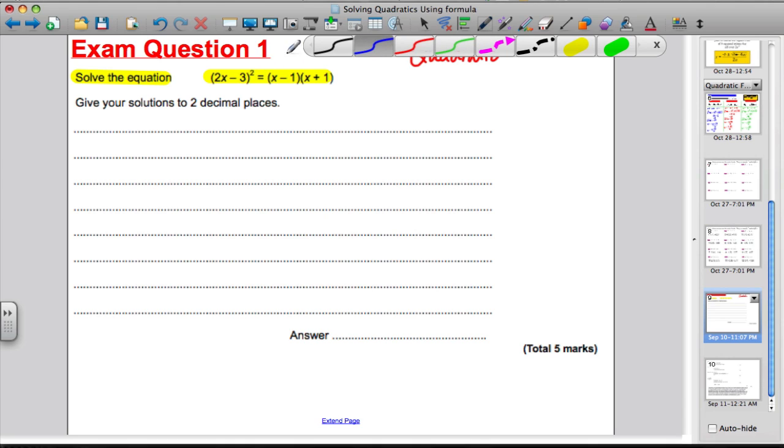Firstly, it doesn't look like a quadratic equals zero. I can only use the quadratic formula when it equals zero. I've got 2x minus 3 squared equals x minus 1 times x plus 1. My only option, really, is to expand both sides of the equation. So let's have a go.